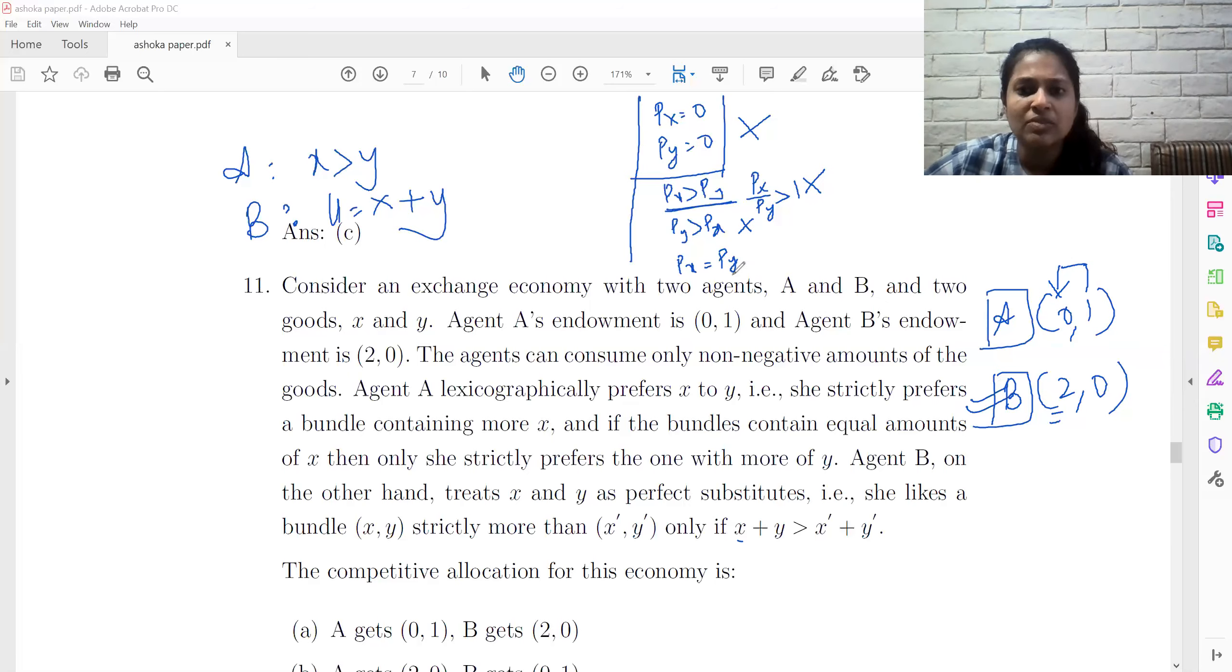The only possibility is where PX is equal to PY. If PX is equal to PY, then the trade possible is that A gives away one unit of good Y and gets one unit of good X at a price ratio of one. So PX by PY equal to one.